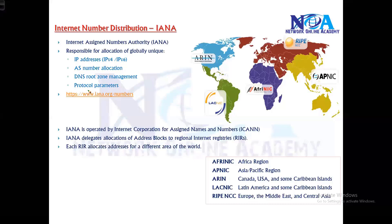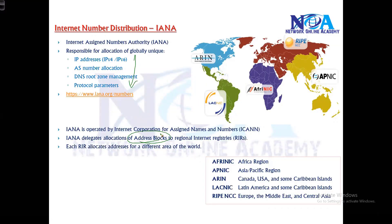IANA maintains IP address allocations. IANA is operated by the Internet Corporation for Assigned Names and Numbers — ICANN. IANA delegates all address blocks to RIRs — Regional Internet Registries.